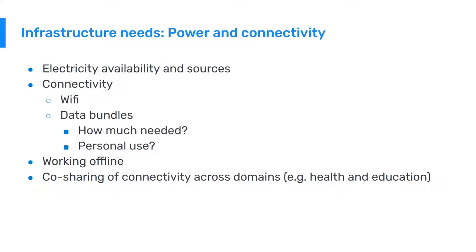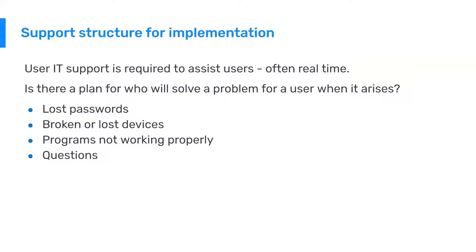We have also seen interesting examples of co-sharing of connectivity — for example, common Wi-Fi points across domains, where in a district the health office and education office share a connectivity hotspot. The support structure for implementation is also placed under infrastructure. User IT support is required to assist users, often in real time, and this is often an overlooked domain in planning DHIS2 implementations. You have to think about who will pick up the phone when the user has a problem. Entering data once a month among 50 users has very different IT support needs than 2,000 health workers entering data every time they see a patient. Typically you need a structure to help users recover lost passwords or usernames, support them if their device is broken or lost, if the program is not working properly, or if they have general questions.